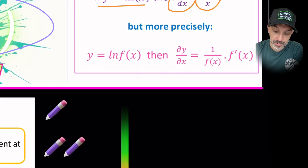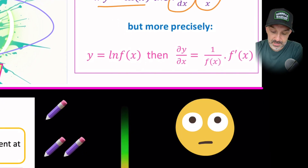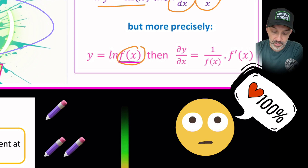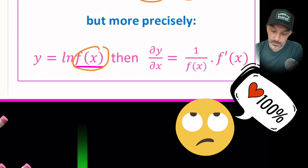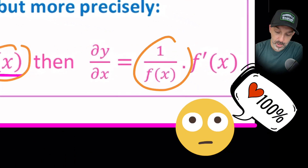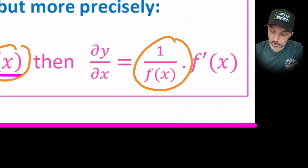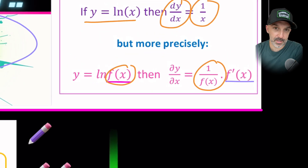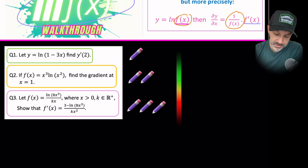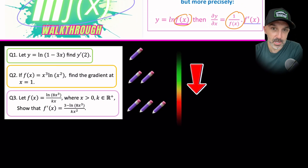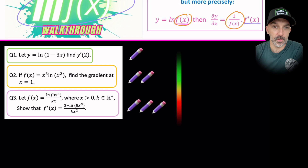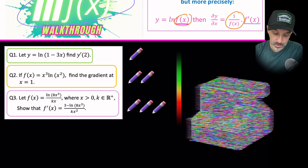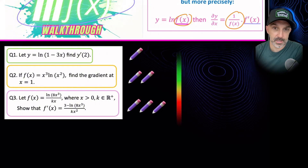Think of it more explicitly: if you have natural log of a function of x, then the derivative of y with respect to x will be 1 over that function of x, multiplied by the derivative of that function. The three questions increase in difficulty, so we'll start with the first and get progressively more challenging. Stop, take a picture if you need to, work them through, then check back to check your answers.